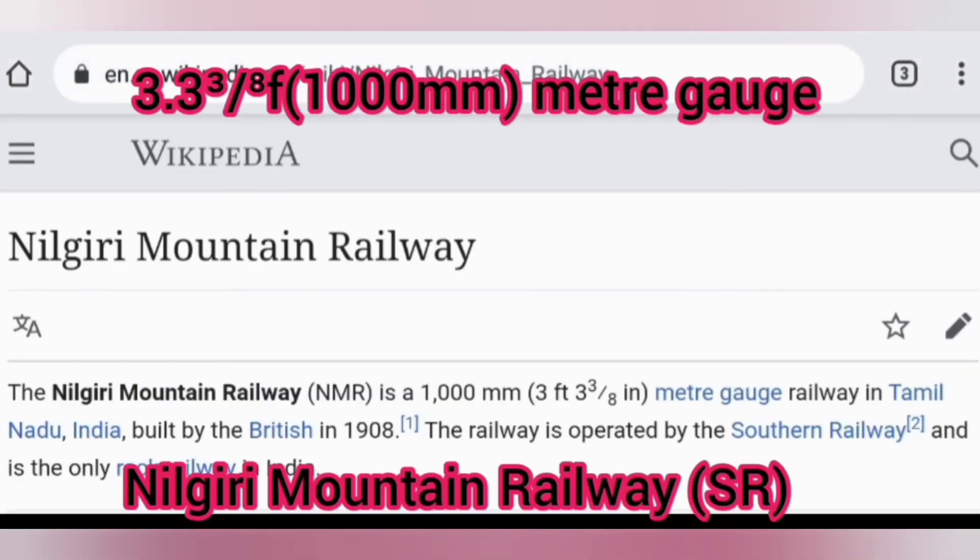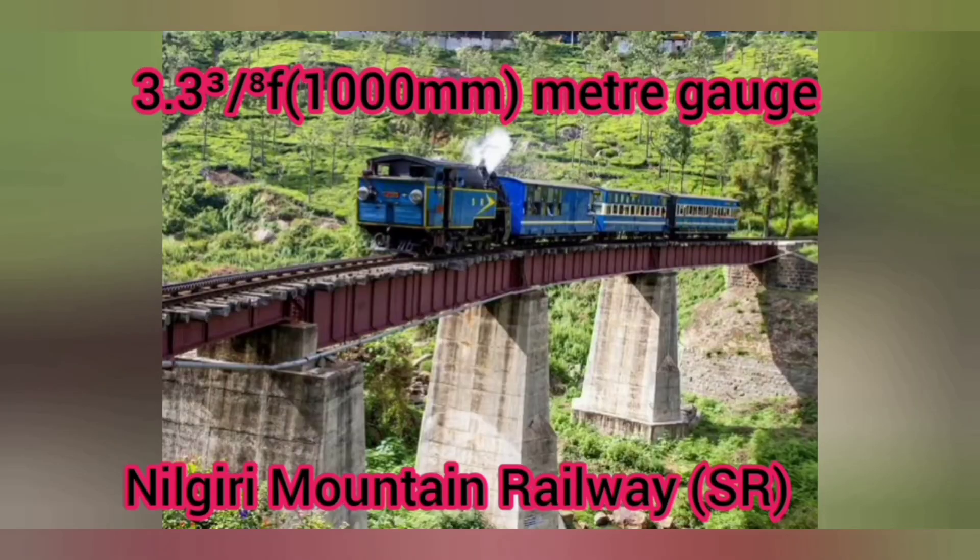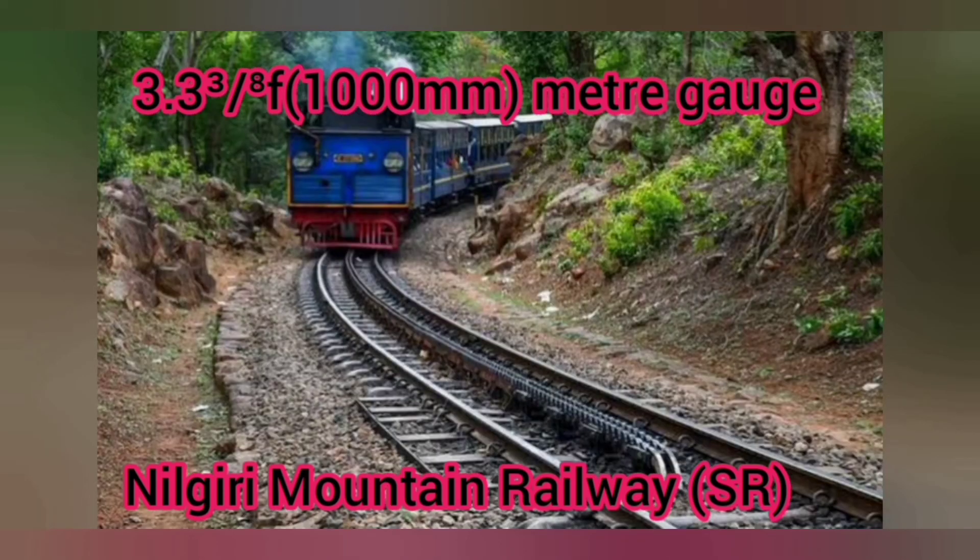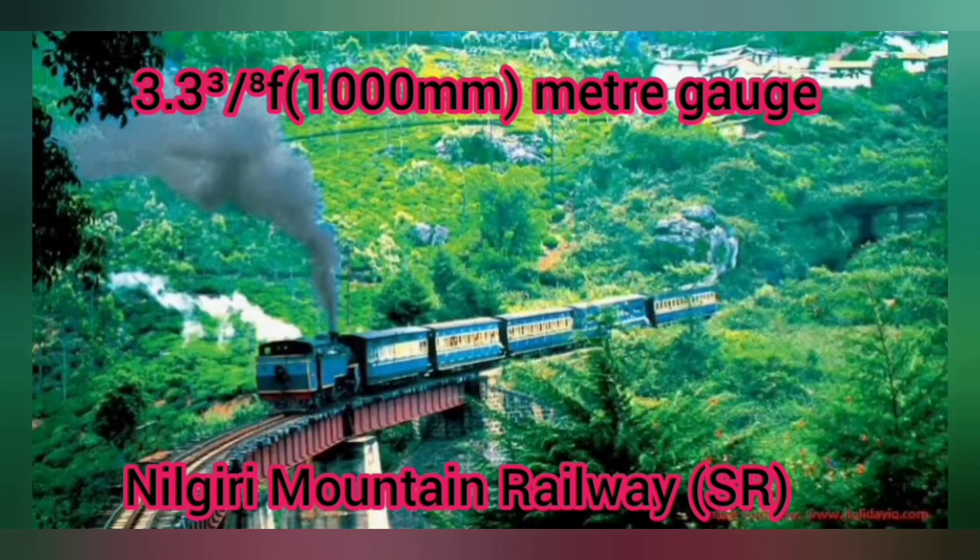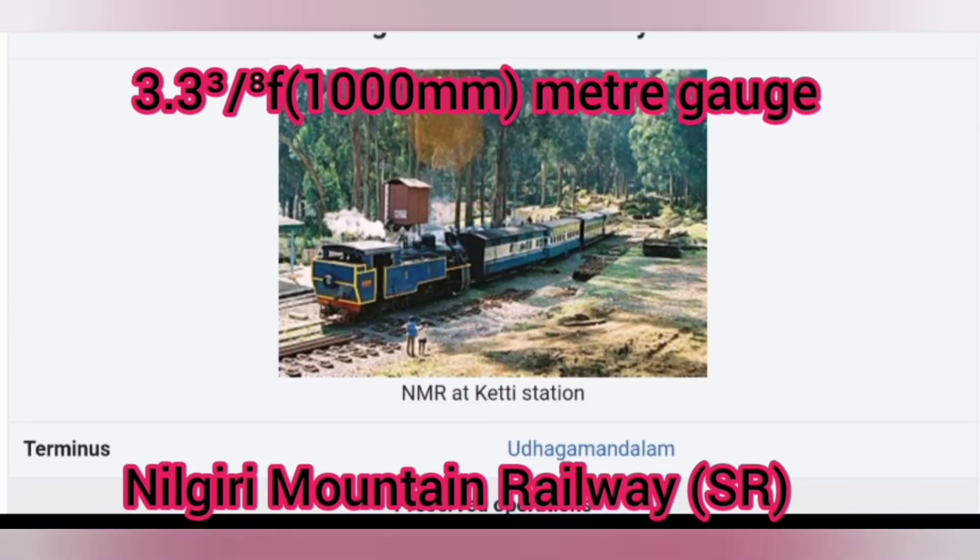Next, 1000 mm meter gauge is operated by our Southern Railway and is only the Rack Railway in India, that is Nilgiri Mountain Railway, about 50 km only.